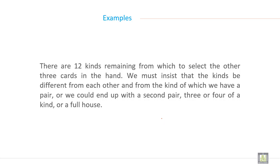There are 12 kinds remaining from which to select the other 3 cards in the hand. We must insist that the kinds be different from each other and from the kind of which we have a pair, or we could end up with a second pair, 3 or 4 of a kind, or a full house.